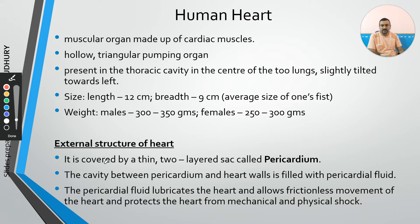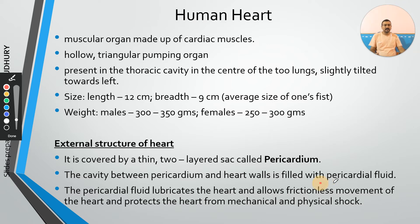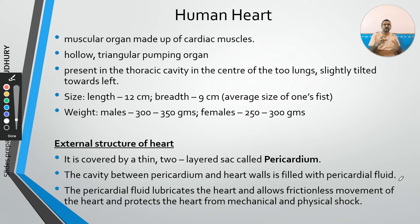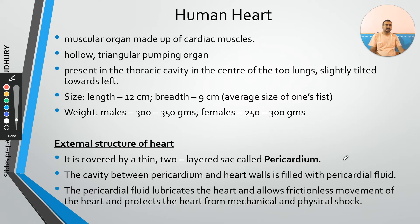The external structure of the heart has an outer covering made up of two layers — a two-layered sac called the pericardium. There is a cavity between the heart walls and the pericardium called the pericardial cavity, filled with pericardial fluid. The pericardial fluid lubricates the heart because the heart continuously carries out contraction and relaxation, which creates friction. It also acts as a mechanical or physical shock absorber. This is an important exam point.